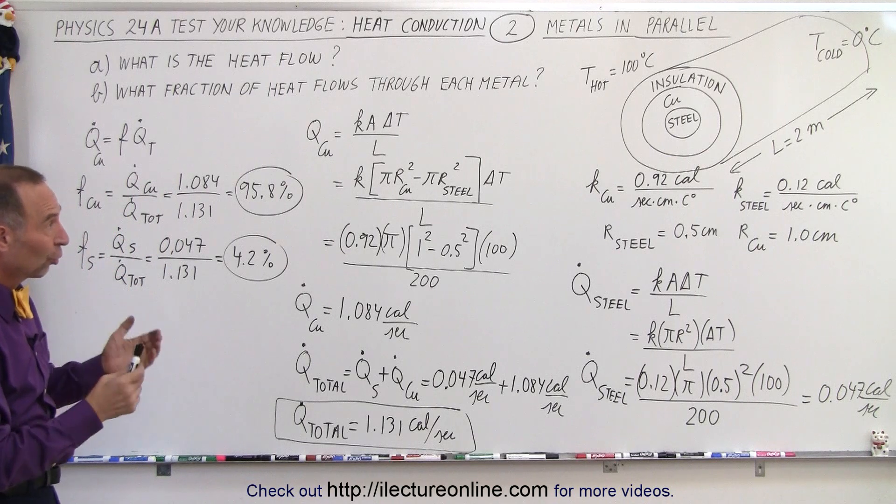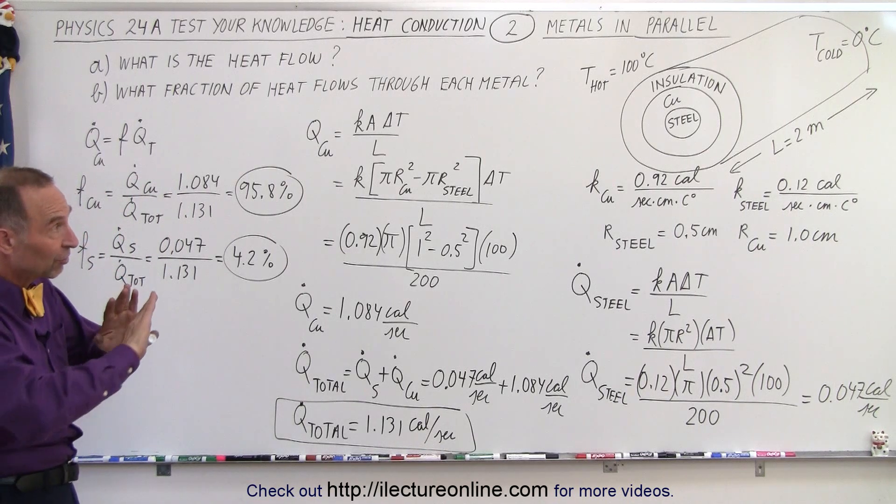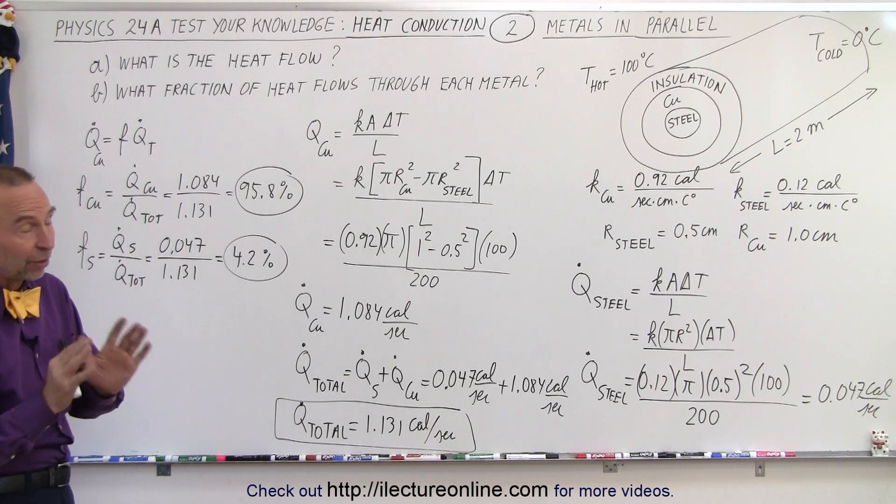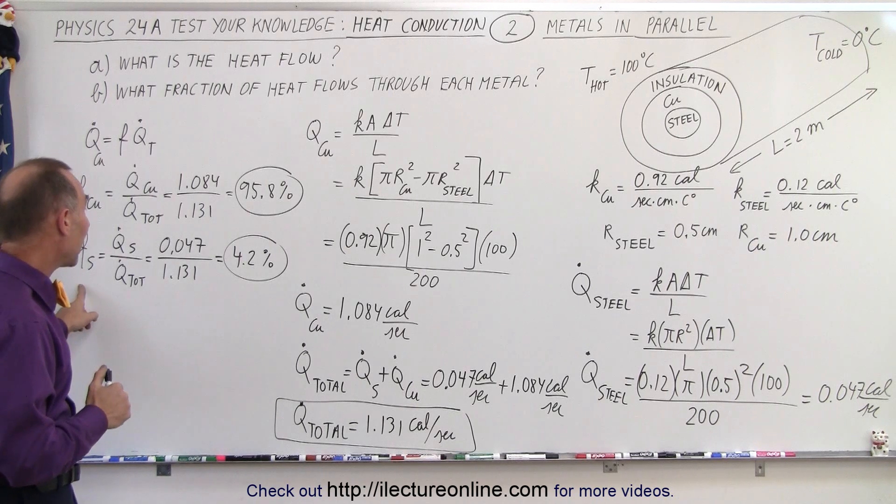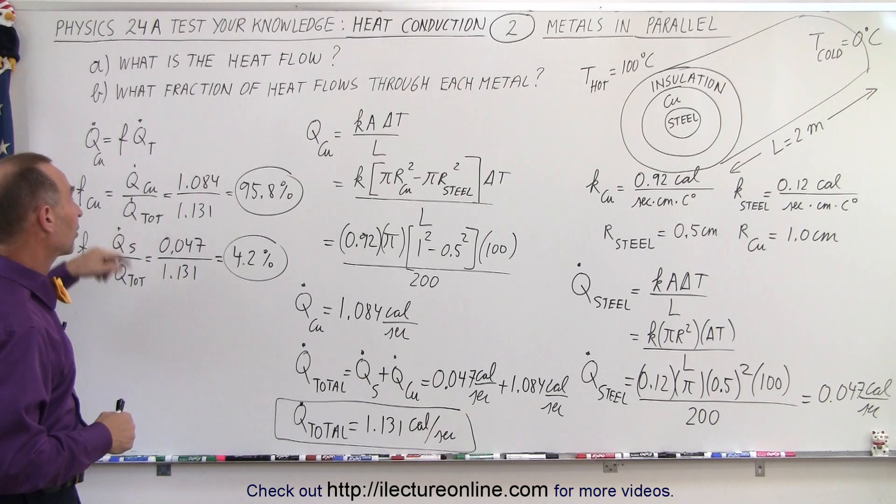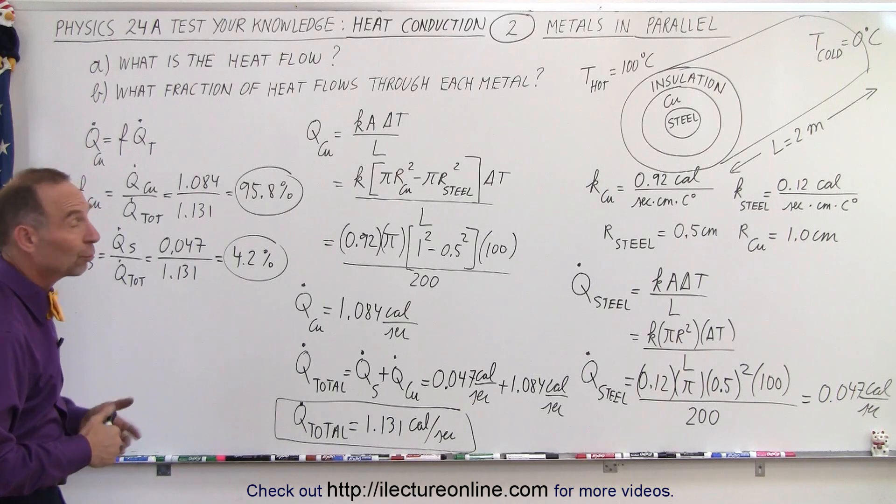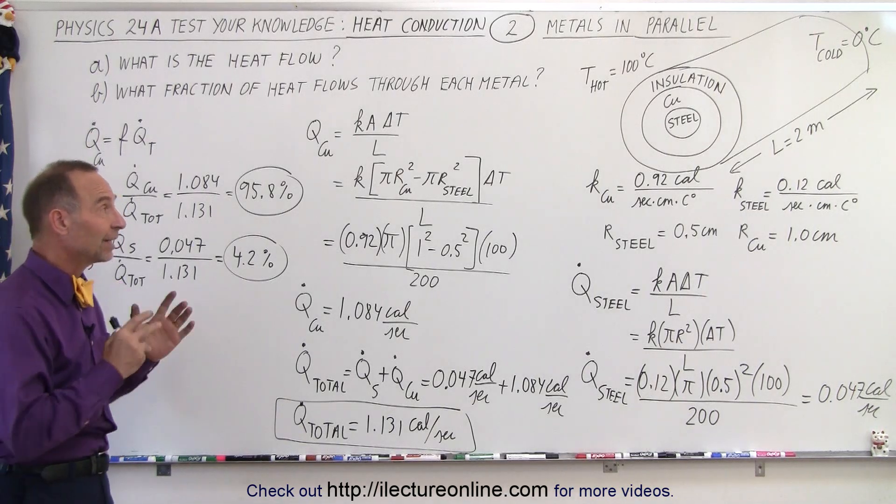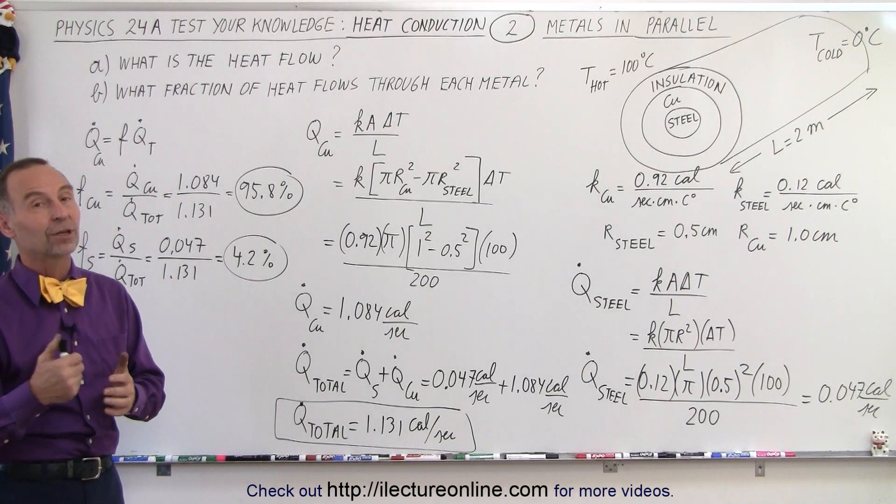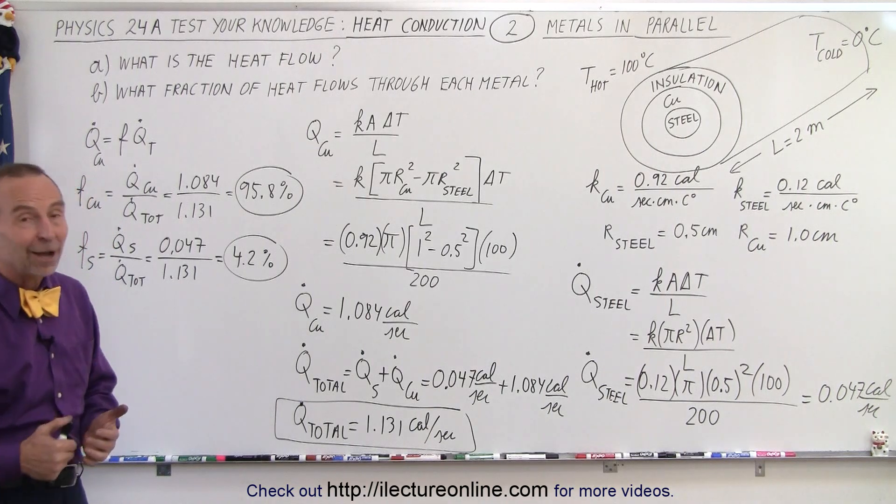So obviously the majority will go to the copper for one thing, because you have a larger cross-sectional area. It's about a three to one. And on top of that, the conductivity for copper is a lot higher than the conductivity for steel. That's why the overwhelming portion of that heat transfer will indeed be through the copper. And that is how it's done.